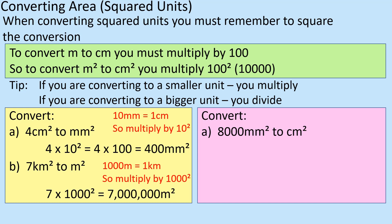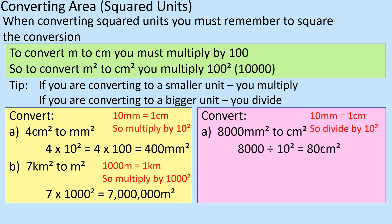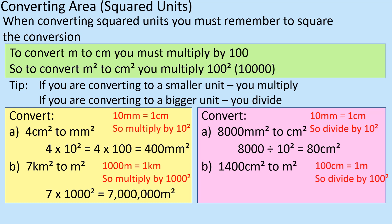What about 8,000 millimetres squared to centimetres squared? The conversion is 10 — there are 10 millimetres in a centimetre — so my unit gets bigger, meaning I divide by 10 twice, so divide by 100, giving 80 centimetres squared. Then 1,400 centimetres squared to metres squared: the conversion is 100, so divide by 100 twice, which gives 0.14 metres squared.